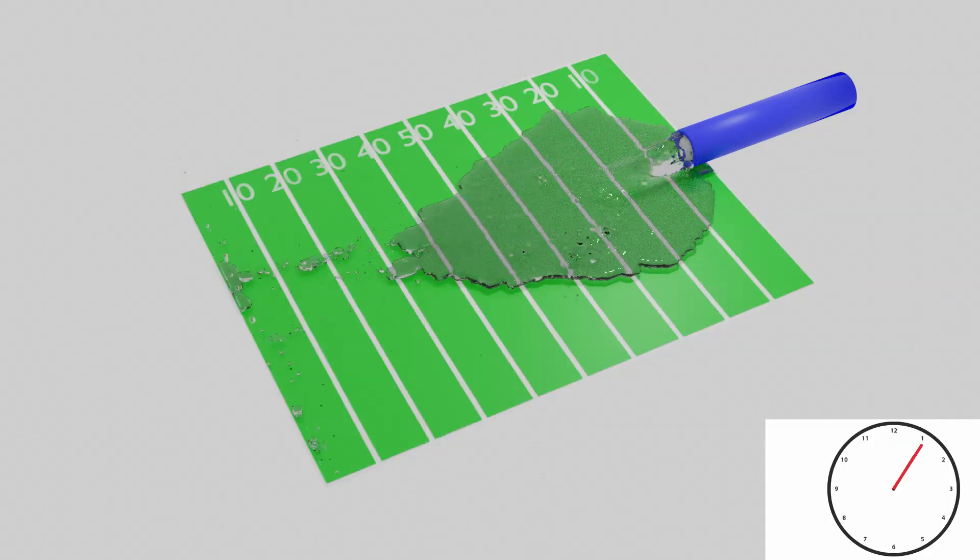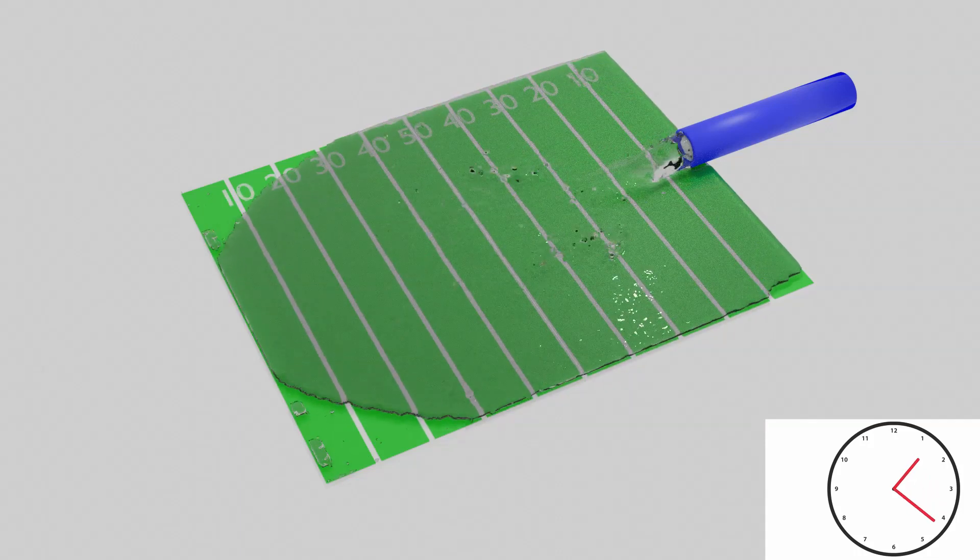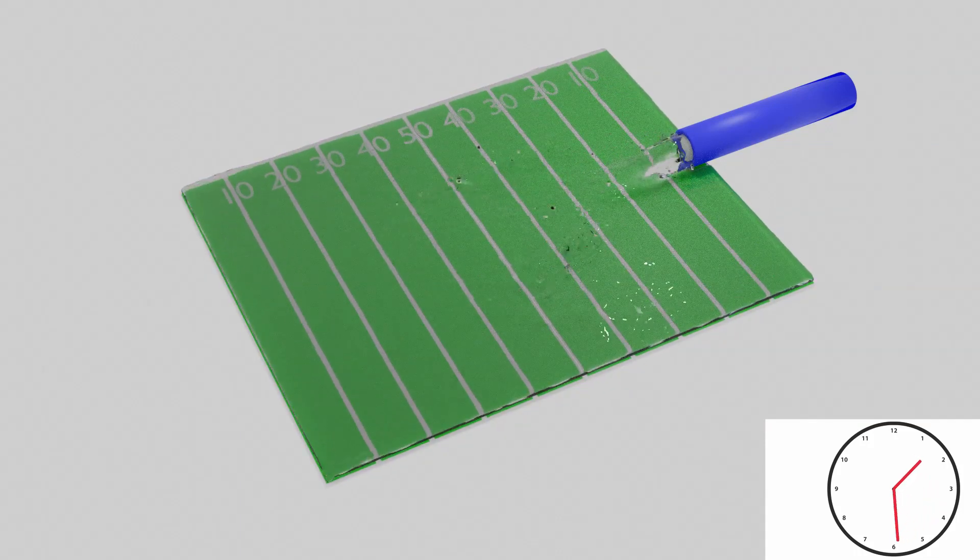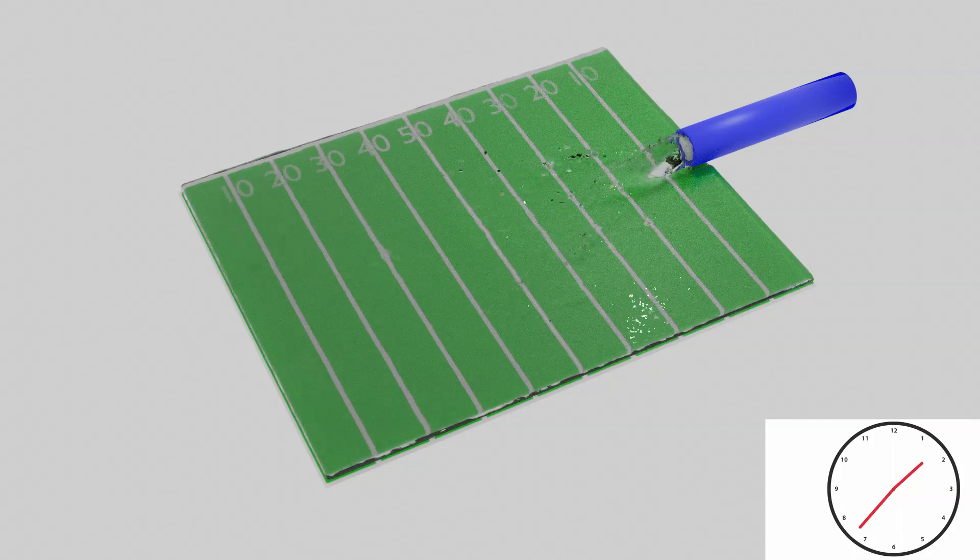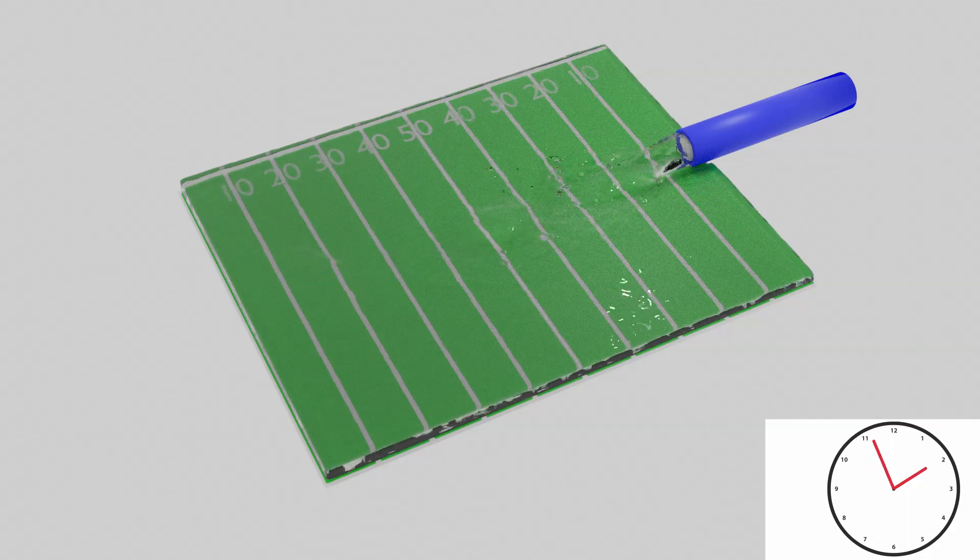If we then record the time it takes to fill that volume, then we know the rate of flow that took place. If it took one hour to fill the football field one foot deep, then the flow is 1.1 acre feet per hour.